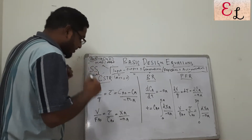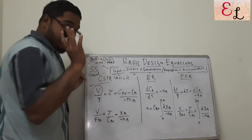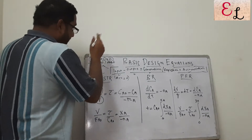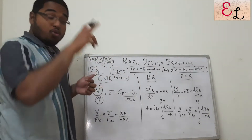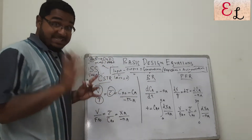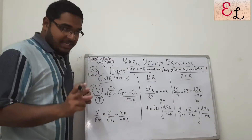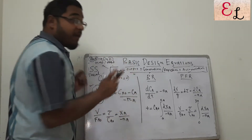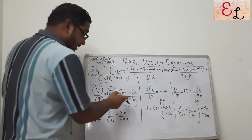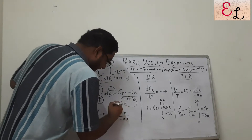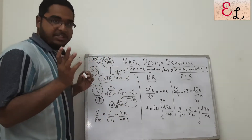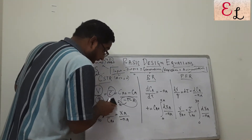The basic CSTR design equation is: volume of the CSTR divided by the total flow into the CSTR equals the residence time tau, which equals CA0 — the initial concentration of A — minus CA, the exit concentration of A, divided by minus rA, the rate of reaction. The rate rA equals K times CA to the power N, where N is the order and K is the rate constant.